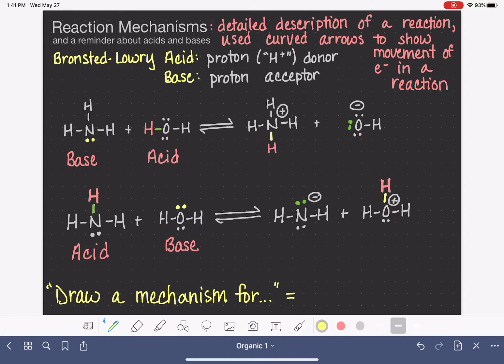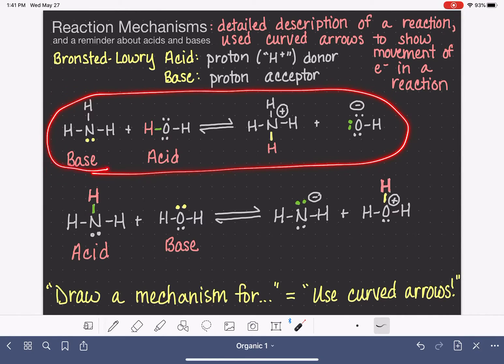that is organic chemistry speak for use curved arrows. When somebody asks you to draw a mechanism, they are specifically asking you to use curved arrows to show how a reaction takes place. So let's take a look at these reactions. What we're going to do is fill the curved arrows in to turn these reactions into mechanisms.